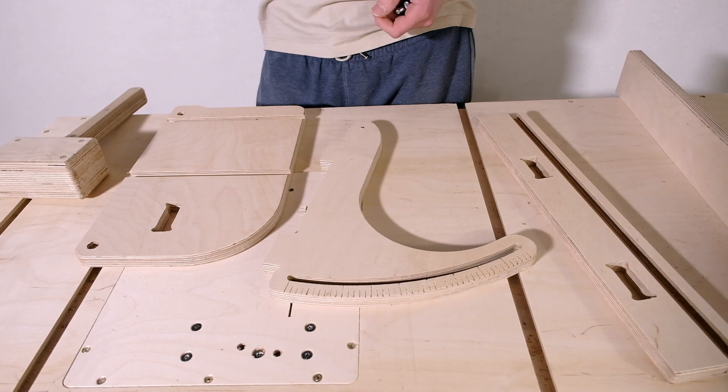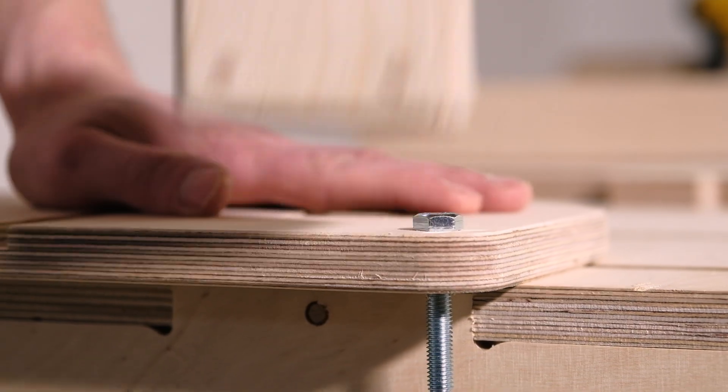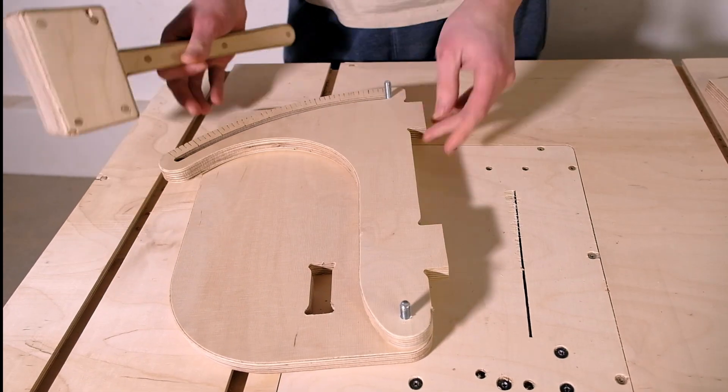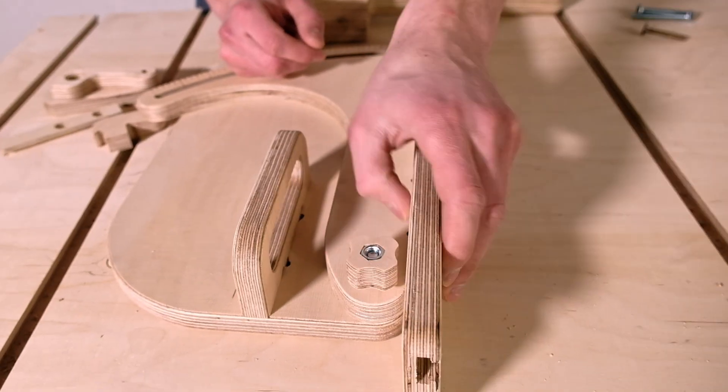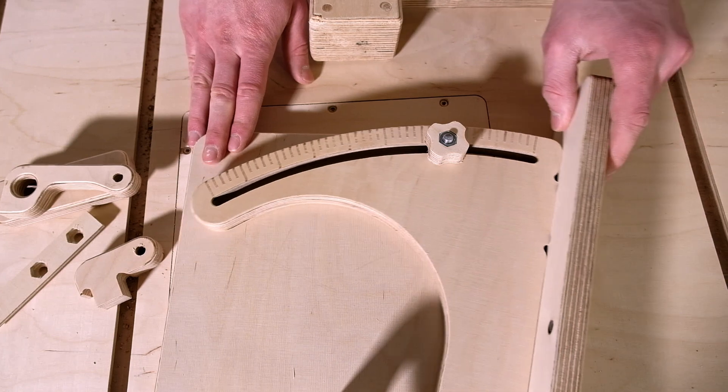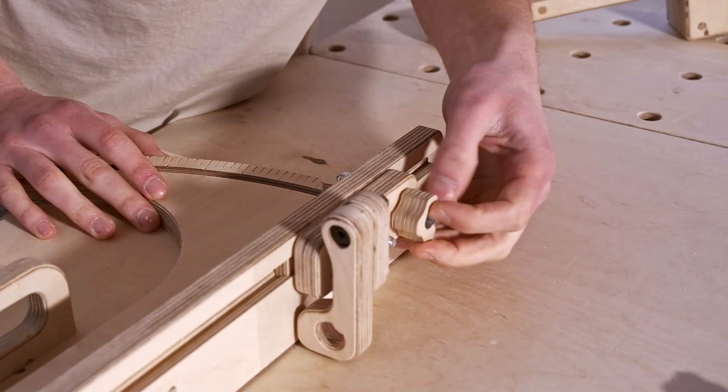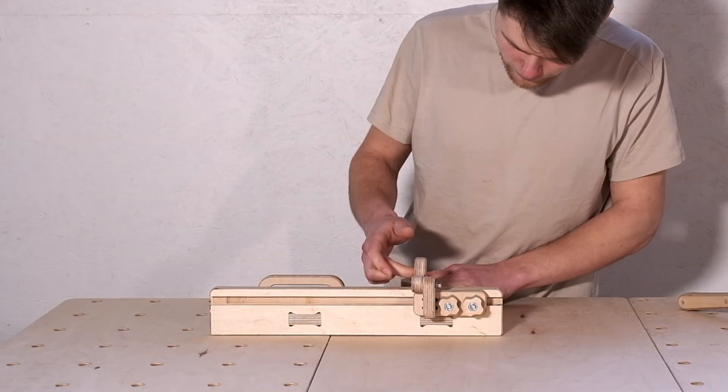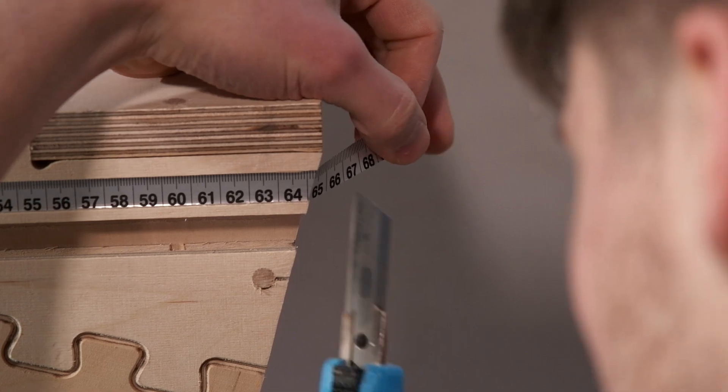Last but not least I assembled the miter gauge. I also made an adjustable stopper with a flippable positioning stick, and I glued the measuring tape for the rip fence.